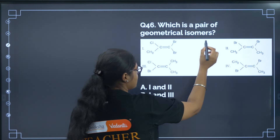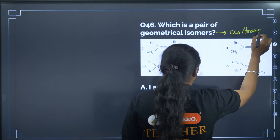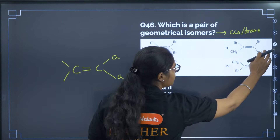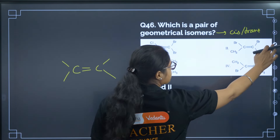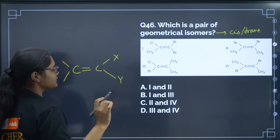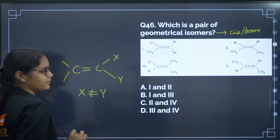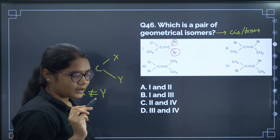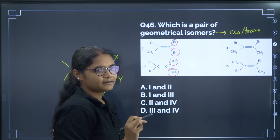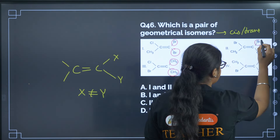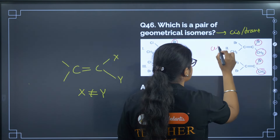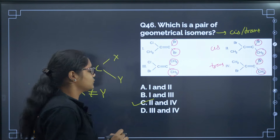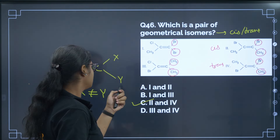Question 46: Which are a pair of geometrical isomers? Geometrical isomers require a C=C double bond where the two groups on each carbon are different (X ≠ Y). Option A has two bromines on the same carbon — no geometrical isomerism. Option B has two methyl groups on the same carbon — no geometrical isomerism. Options 2 and 4 both have two different groups on each carbon, giving cis and trans forms. These are geometrical isomers, so the correct answer is option C.